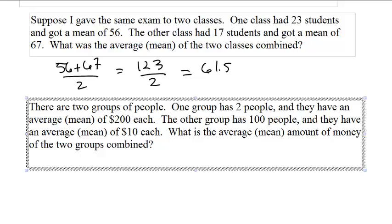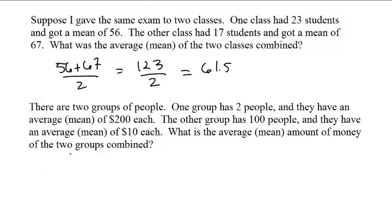If you use the same reasoning on this, you would say the first group has an average of 200 bucks and the second group has an average of 10 bucks, so just add 210 divided by 2, and that's $105. So the combined group of 102 people have $105 each on average. But that's just not true. What do you do?